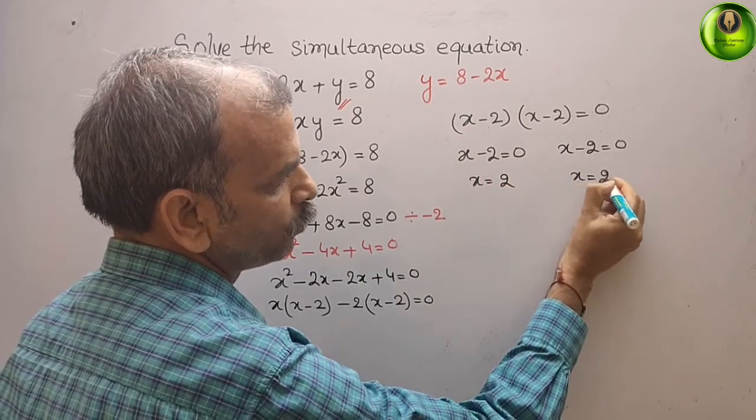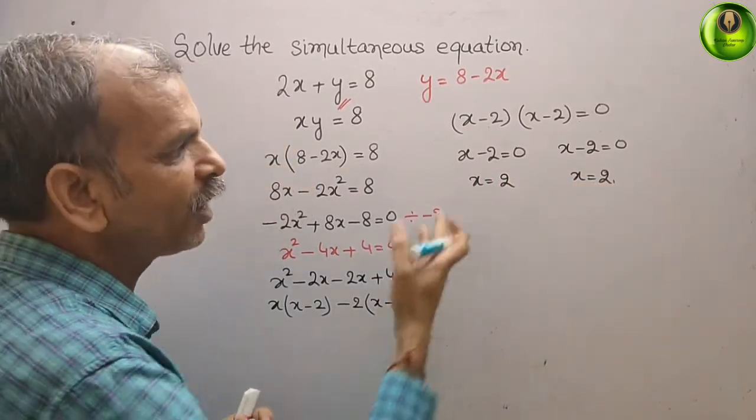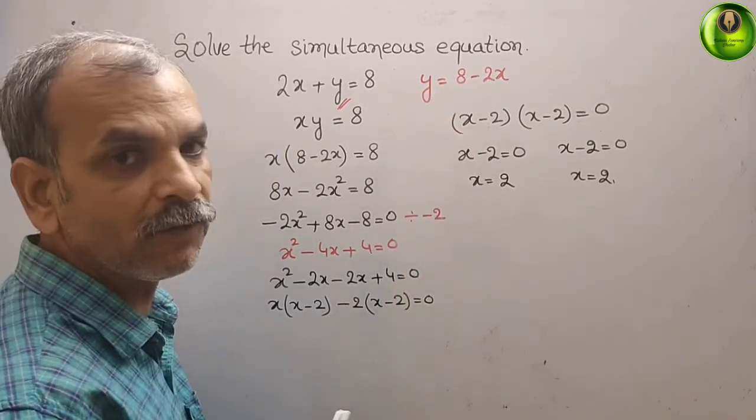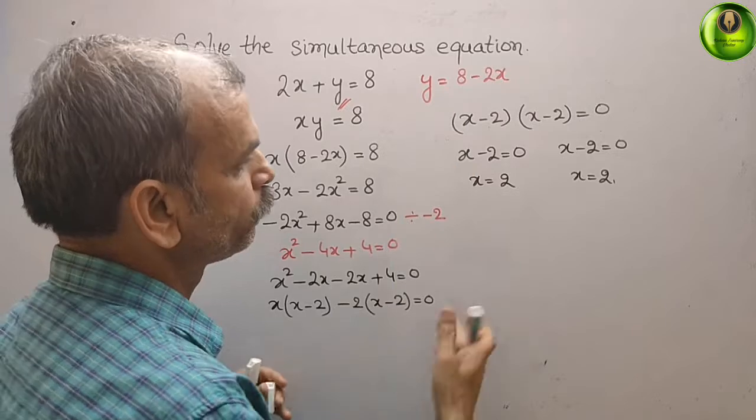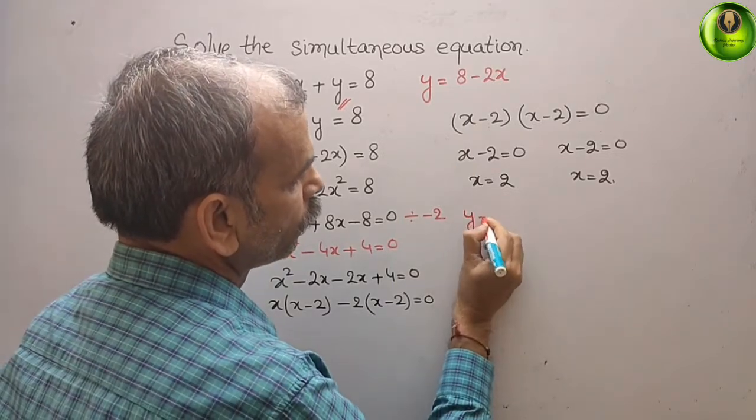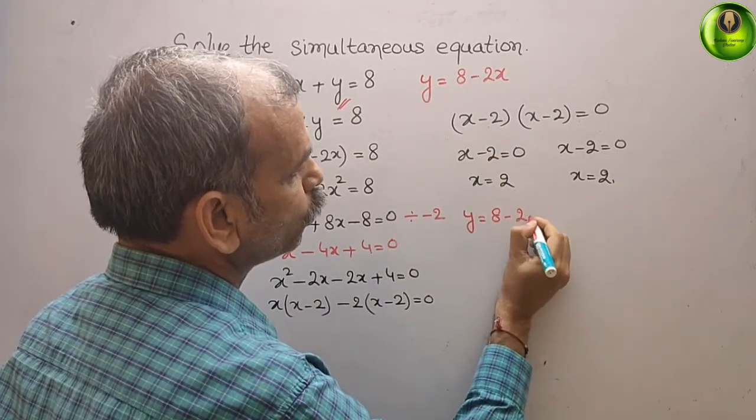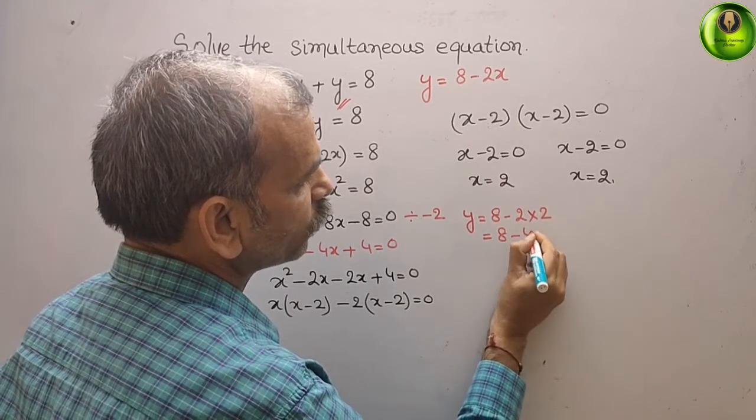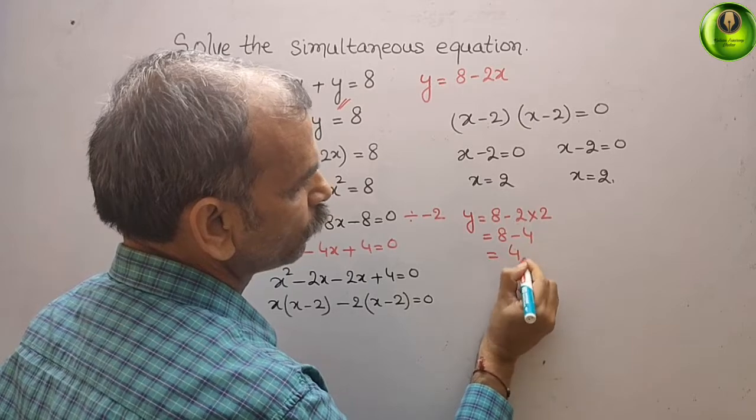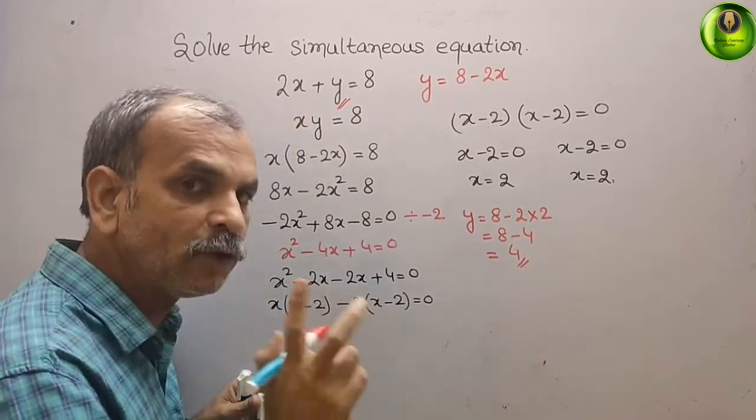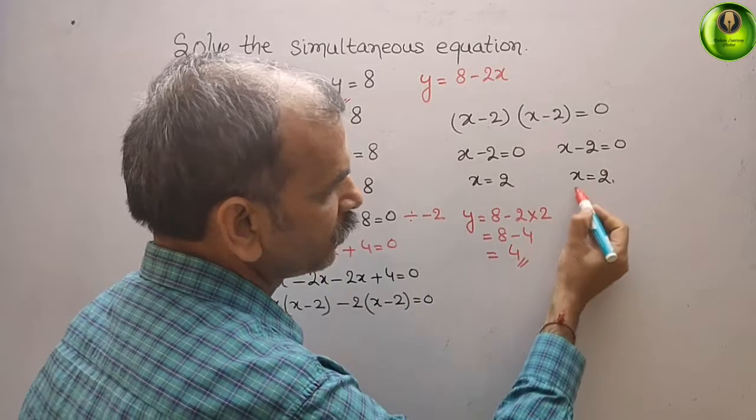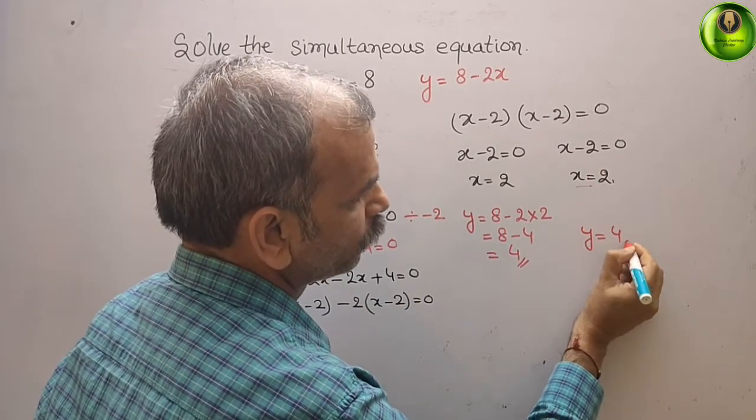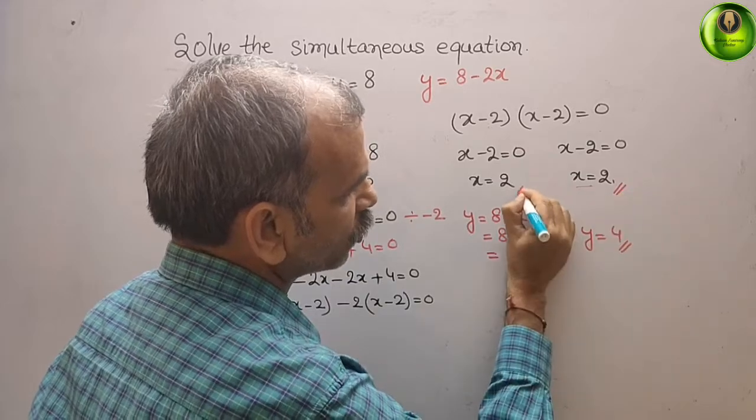Now we will substitute any one of them in this equation. What we will get? y is equal to 8 minus 2, that is 8 minus 4, that is equal to 4. But we have to write twice, so here also y is equal to 4. So these are your solutions.